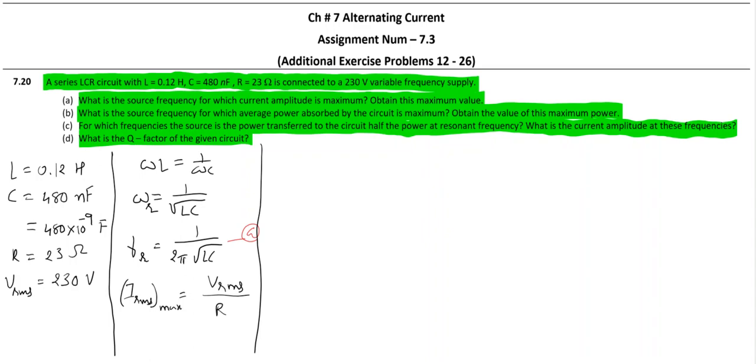So that is all about A. Moving to B: what is the source frequency for which average power absorbed by the circuit is maximum? Now again, when current is maximum, power will be maximum.